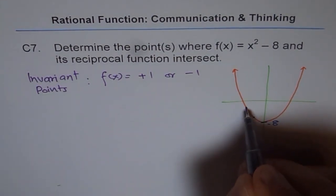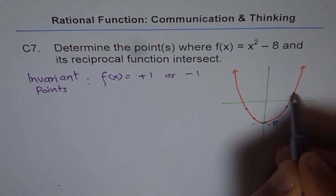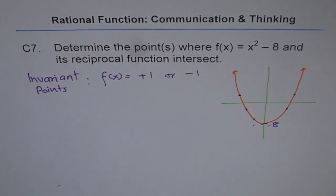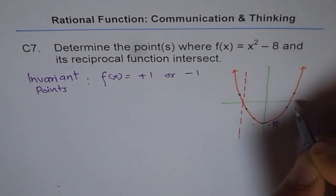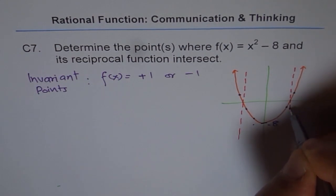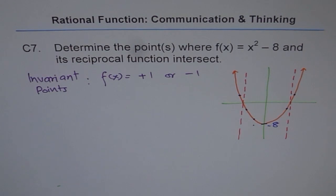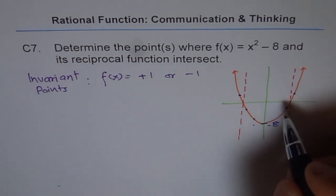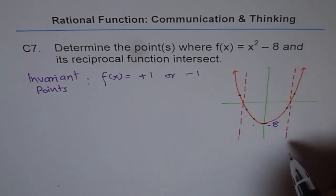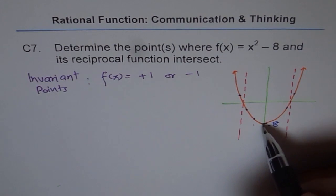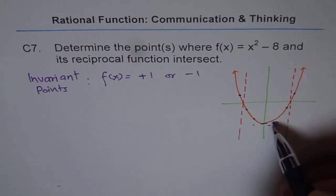These are the points where the value of f(x) should be equal to either plus 1 or minus 1. Let us assume that on the graph this represents minus 1 and this represents plus 1. So let me draw the reciprocal function for this particular graph. We have vertical asymptotes at the x-intercepts. For the negative part the reciprocal will be negative; for the positive part the reciprocal will be positive. As we approach 0 for the function, its reciprocal approaches infinity. Both will intersect wherever the value of the function is plus or minus 1.